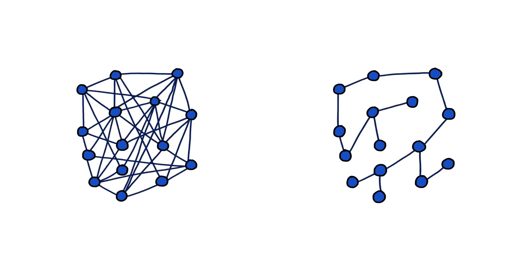If we can guess what the virus will do next, we can better know how to stop it. Of course, not all social networks are the same, and their structure is very influential over how a virus will spread. If I asked you which social network you'd rather be a node in during a deadly virus outbreak, which would you choose?